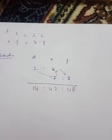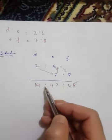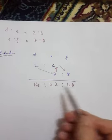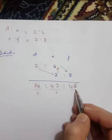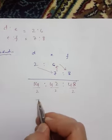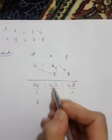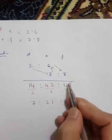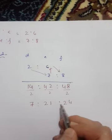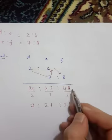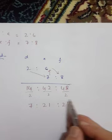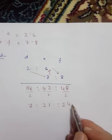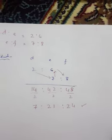Now we can write the answer. You could divide to simplify, but whether you simplify or not, this is your answer. If you simplify by dividing by 2, you get 7 ratio 21 ratio 24.